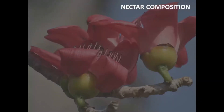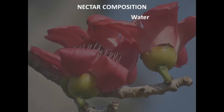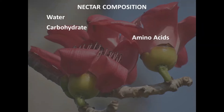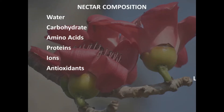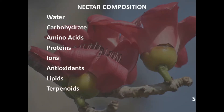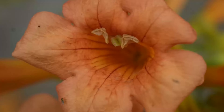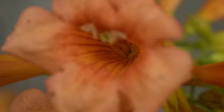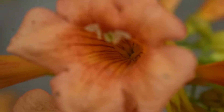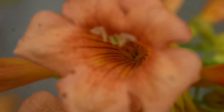Nectar consists of water, carbohydrates including sugars such as glucose and fructose, amino acids, proteins, protein ions, antioxidants, lipids, terpenoids, and secondary compounds in some amount. The concentration of nectar varies from species to species. Nectar is present deep inside the flower, such as in tubular or closed flowers.